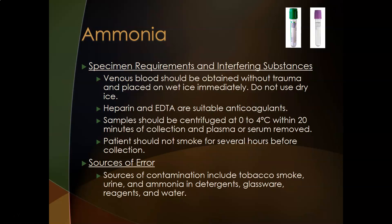Venous blood should be obtained without trauma — it cannot be a difficult stick. The sample must be placed on wet ice immediately. Tubes of choice are heparin (green top) and EDTA (purple top) — both are suitable anticoagulants for plasma. Samples should be centrifuged in a refrigerated centrifuge at 0–4°C within 20 minutes of collection, and the plasma must be removed from the cells promptly.